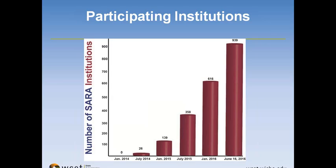As of today we're at approximately 970-some-odd institutions, and we're anxiously awaiting institution number 1,000. One other thing to note is that many institutions are now renewing, and institutions are renewing at just about a 100% rate. If we find an institution doesn't appear to be renewing, with a little more effort we usually discover it's a communications problem on campus — so virtually all institutions appear to be renewing.